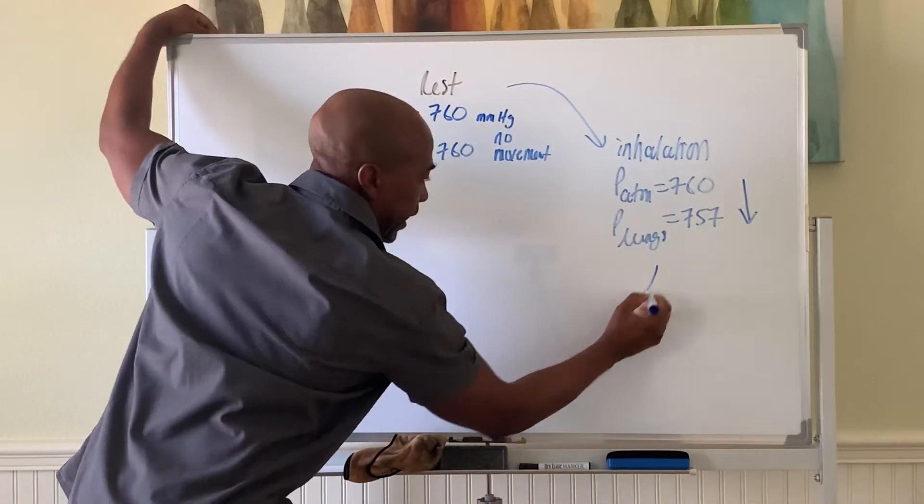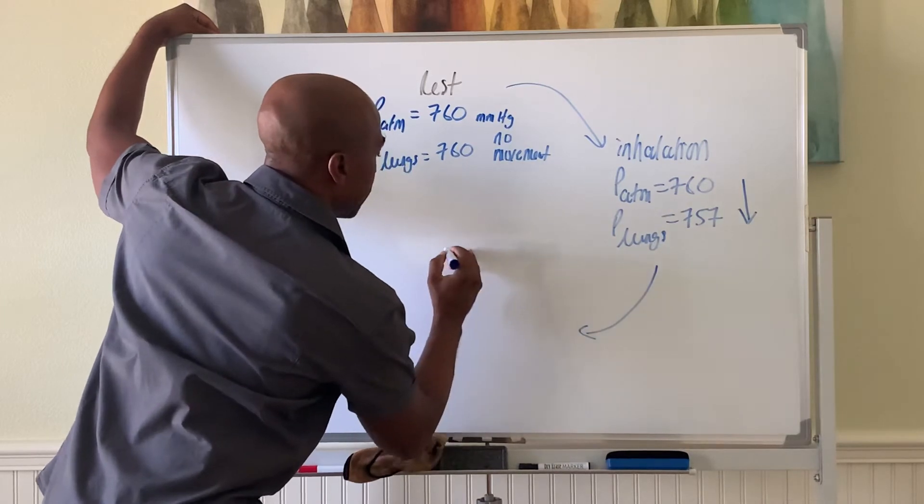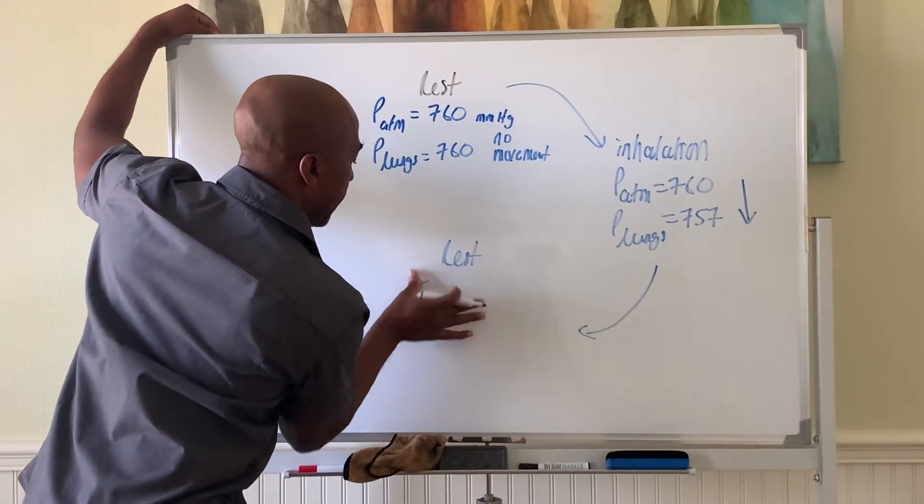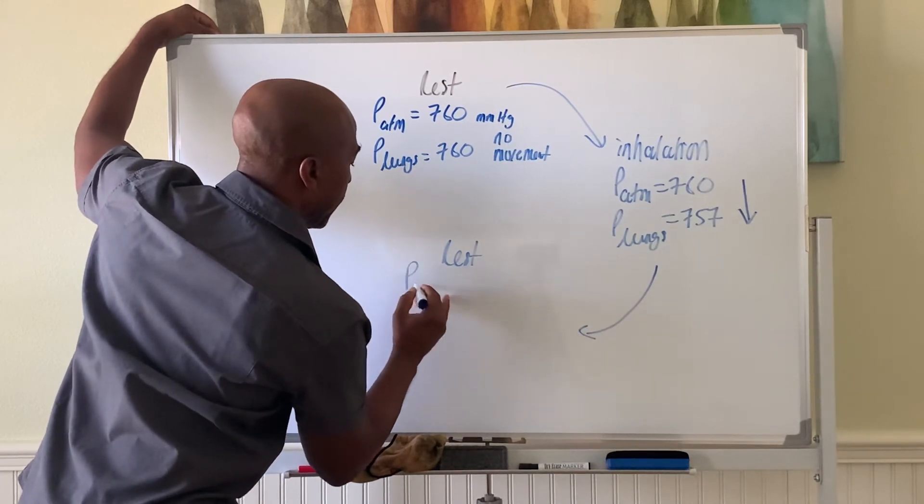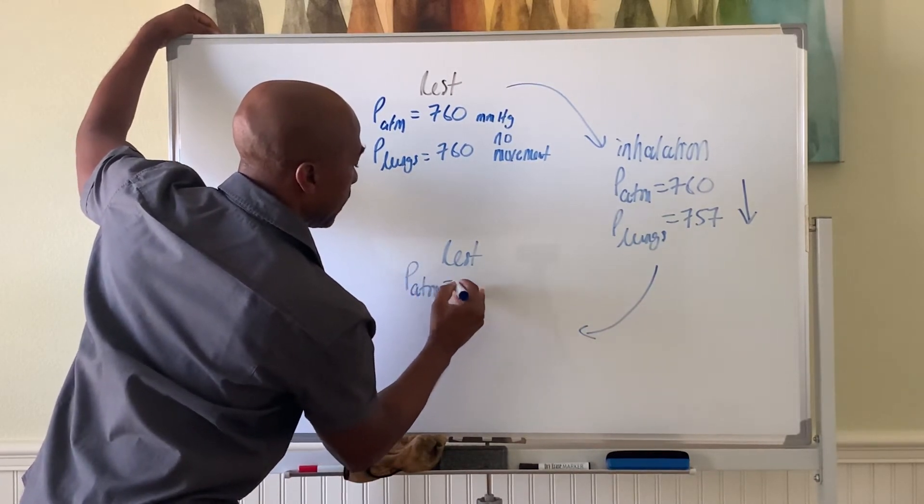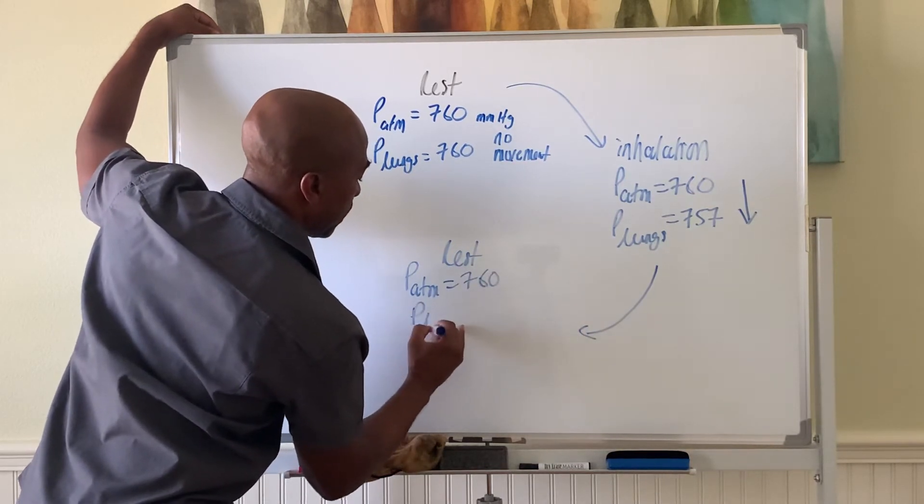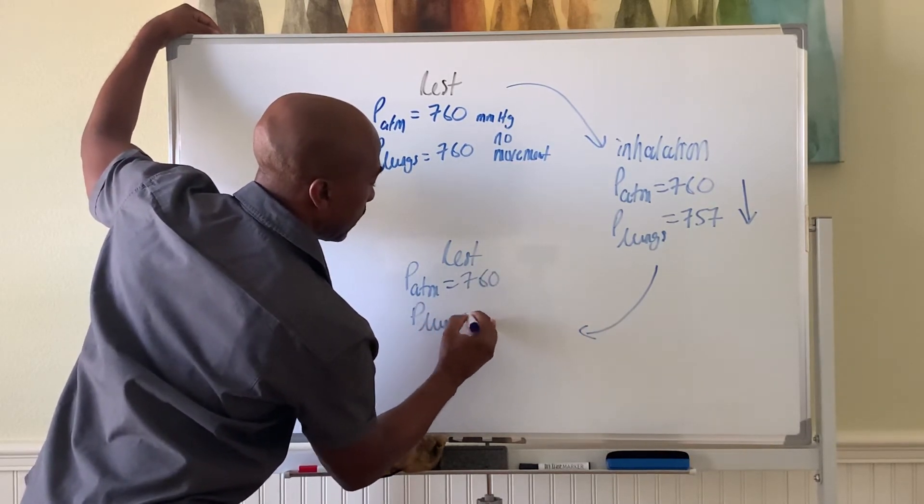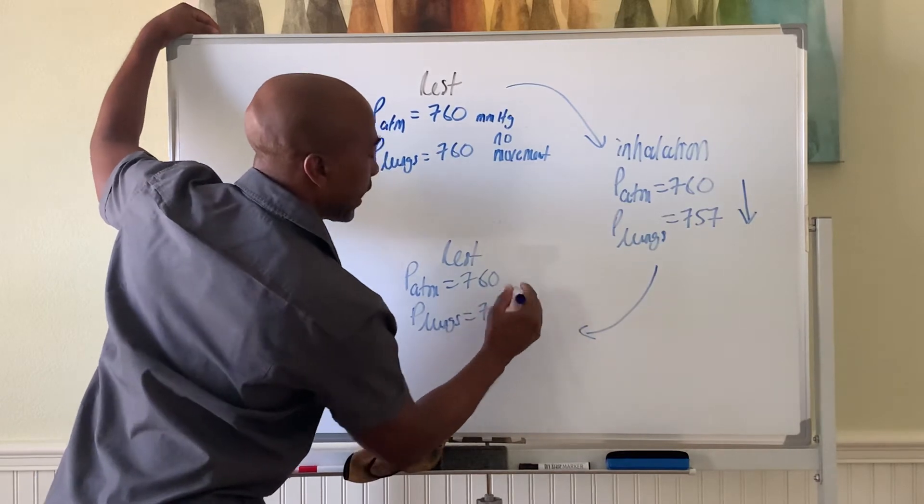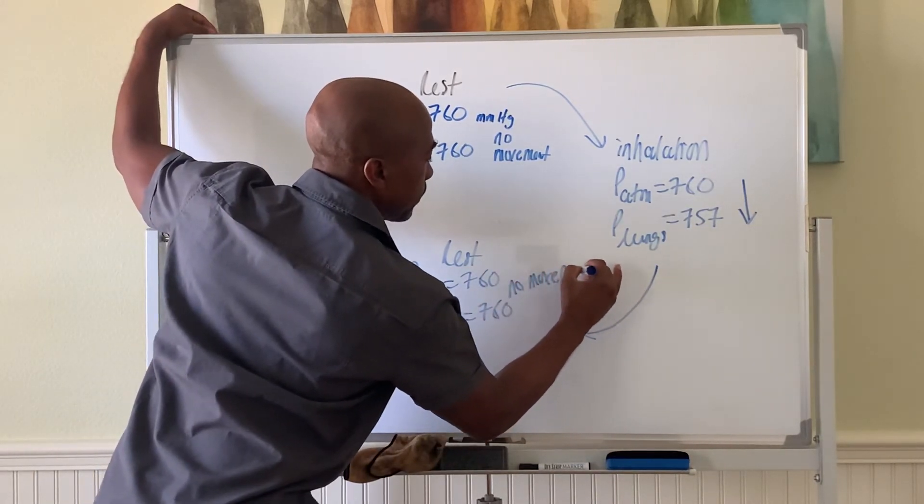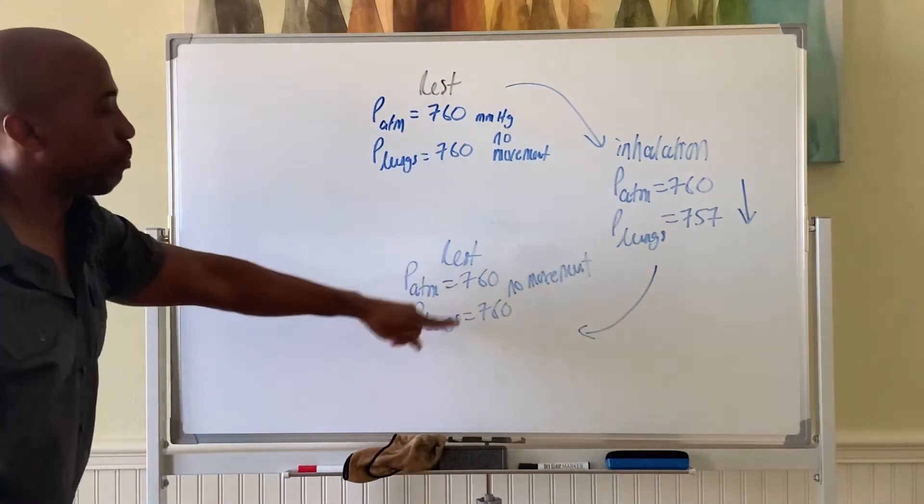Now you're back to rest here. So you rest again, where the pressure in the room is 760, the pressure in the lungs is 760. Again, no movement occurs here because the pressure is the same.